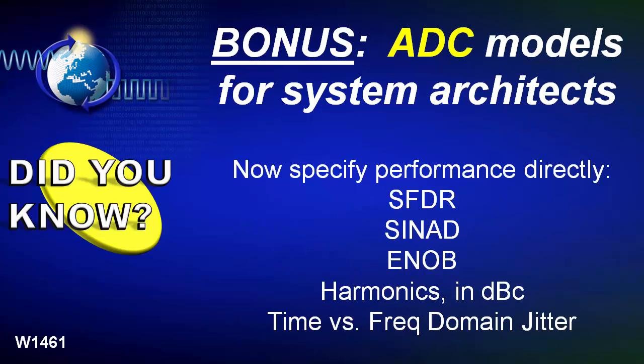If you're an RF system architect, you may want to look at the A-to-D converter model at the data flow level. There's a new A-to-D model in SystemVue that allows you to specify performance directly. Instead of integral nonlinearity error, you can now specify things you really want to measure: spur-free dynamic range, SINAD, effective number of bits, harmonics in dBc, and frequency domain jitter.